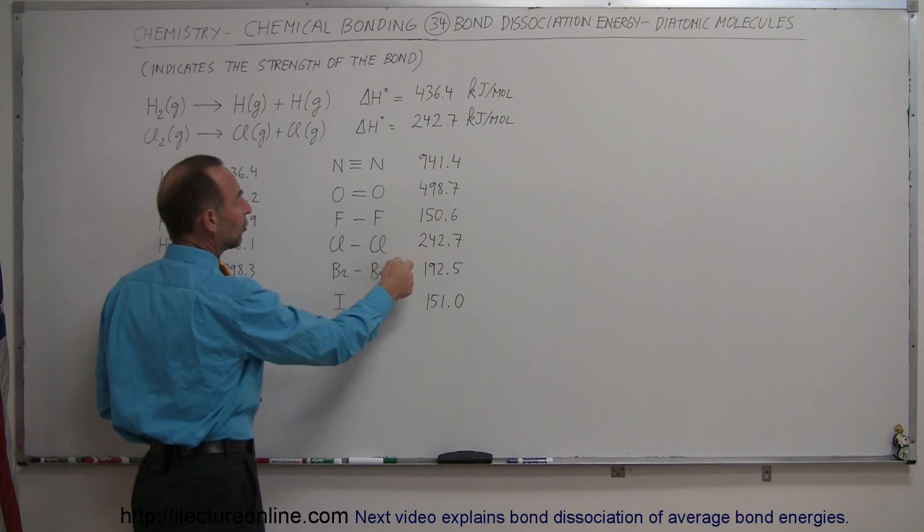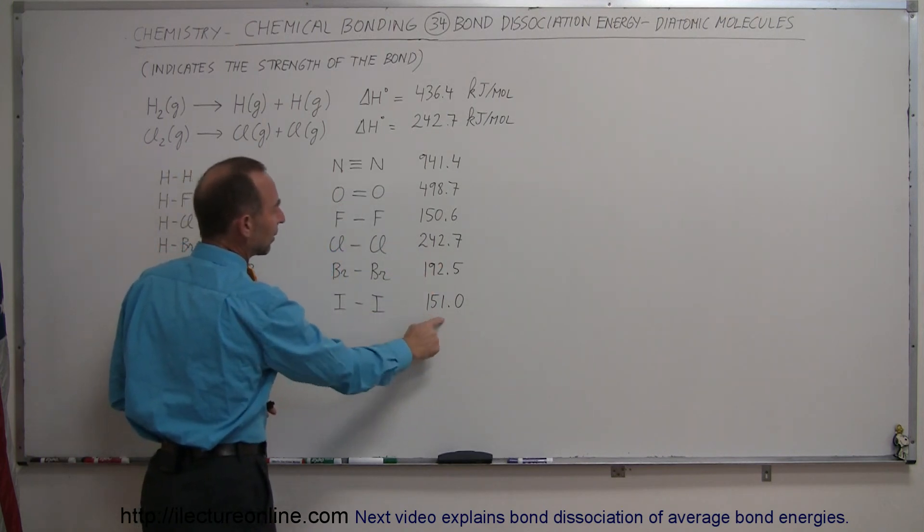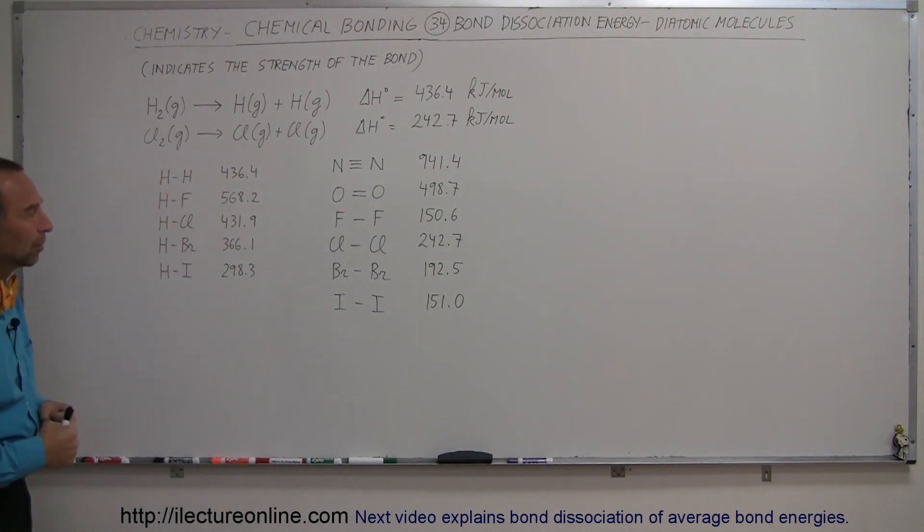Chlorine and bromine, also not nearly as strong as these over here. And then you see iodine to iodine, which is a relatively weak bond and easy to break.